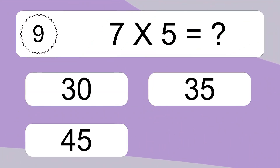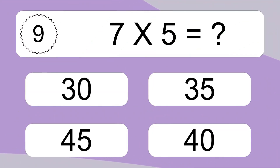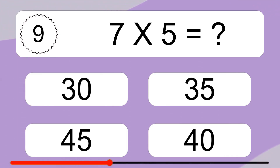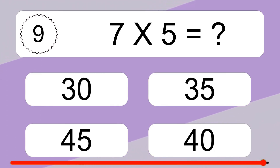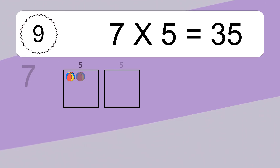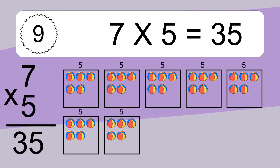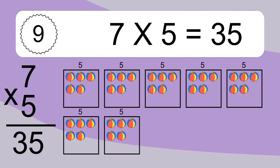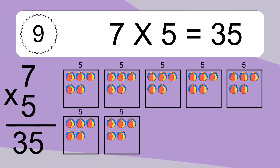7 times 5 equals what? 7 times 5 equals 35. We have 7 boxes, and each box has 5 colorful balls inside. If you count all the balls in all the boxes together, you will have 7 times 5 balls. This equals 35 balls.